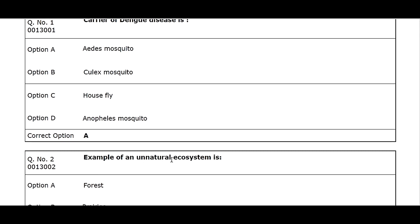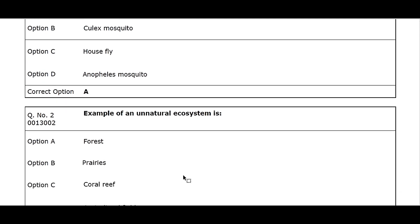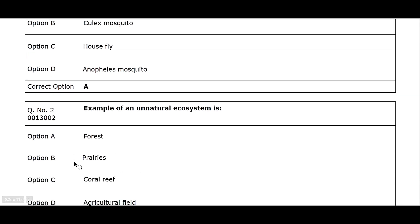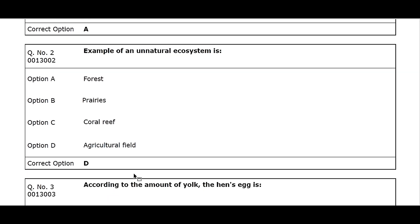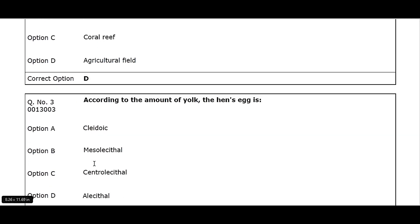Q2. Example of an unnatural ecosystem is: Option A. Forest. Option B. Prairies. Option C. Coral reef. Option D. Agricultural field. Correct option D.